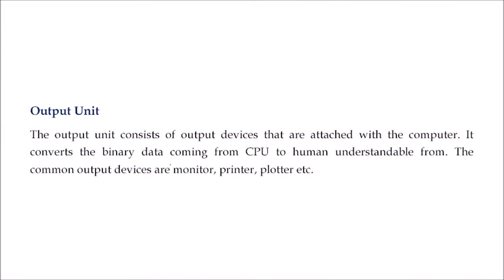Then there is the output unit. Some CPUs do not need to produce visible results — you just give the input and it performs. But if you want to see the output, you have output devices like a monitor, printer, or plotter.